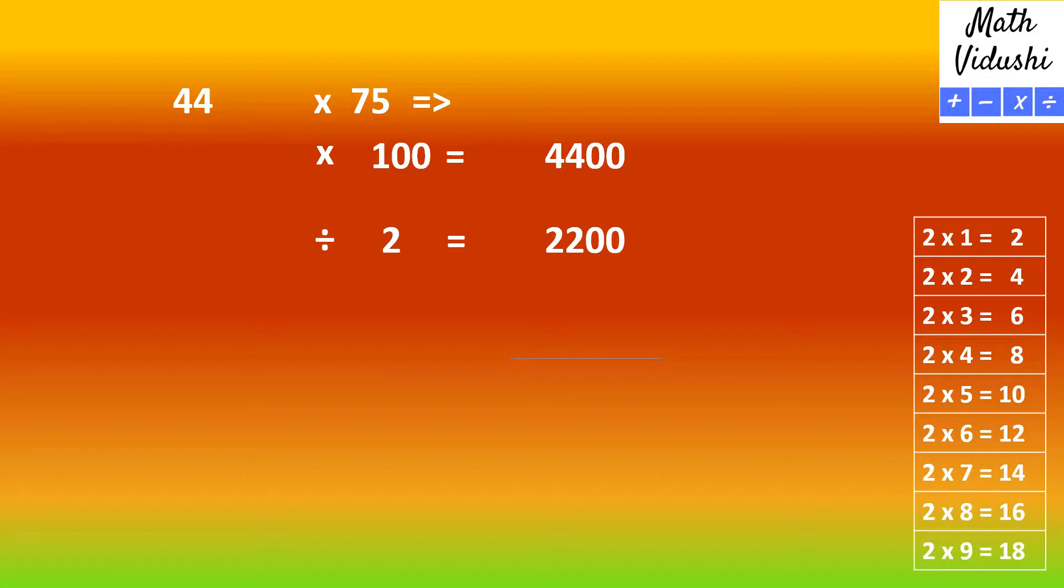Now you divide this answer again further by 2. So you would get half of 2200 as 1100. Now add the last two numbers. 2200 plus 1100 is 3300.